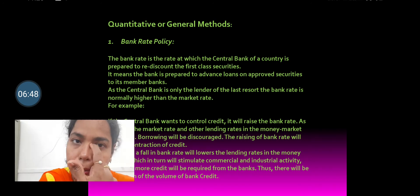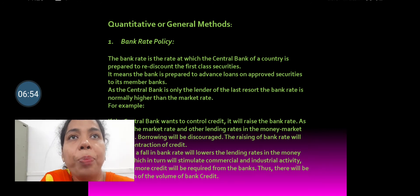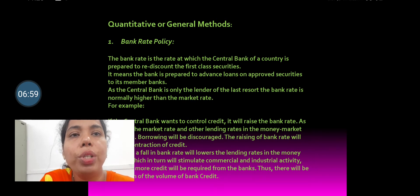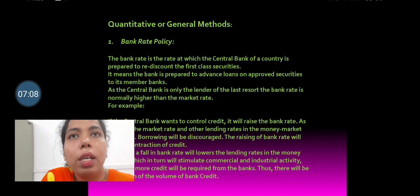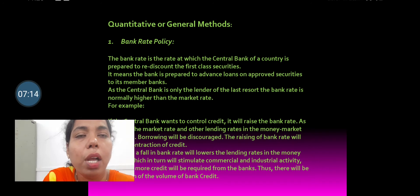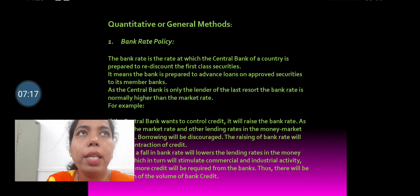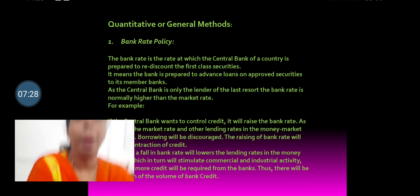Vice versa happens in the case of recession or deflation. In the case of recession, depression, or deflation, the central bank reduces the bank rate. When the bank rate is reduced, the loan becomes cheaper, and at a lower rate of interest, individuals can borrow money from commercial banks. So via the bank rate, the central bank controls credit. In case of inflation, the bank rate is increased; in case of deflation, it is reduced. This is the bank rate policy.